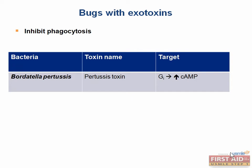Bordetella pertussis also works by activating adenylyl cyclase to increase cyclic AMP. Instead of activating Gs as with Vibrio cholerae, pertussis toxin disables Gi. Since Gi normally regulates adenylyl cyclase activity, its inhibition causes uncontrolled cyclic AMP production. The result is increased cyclic AMP which inhibits phagocytosis and promotes prolonged survival of Bordetella pertussis, causing whooping cough.